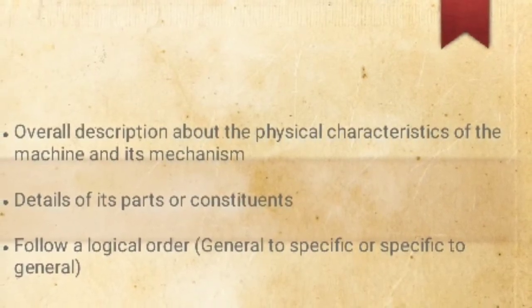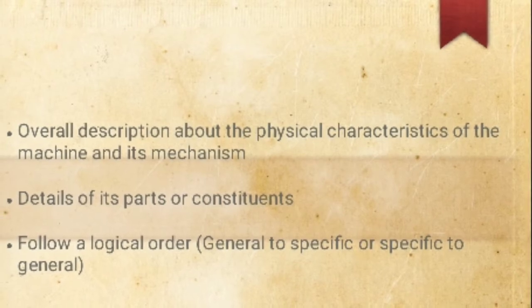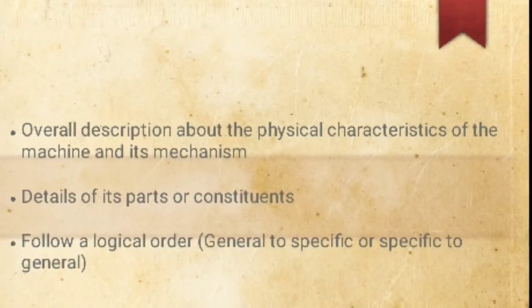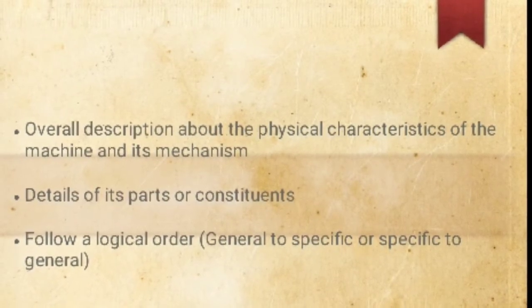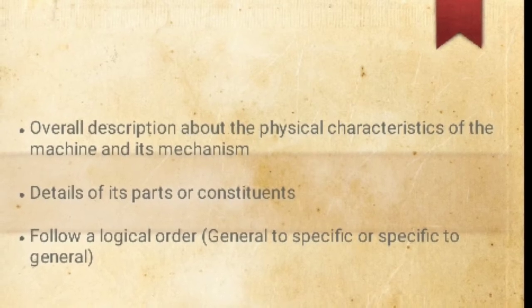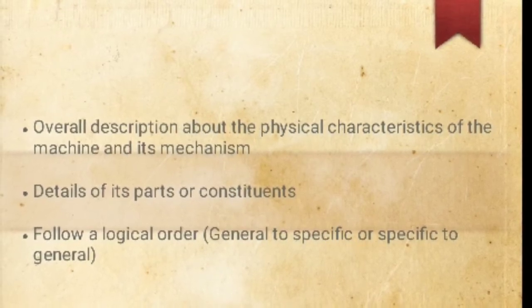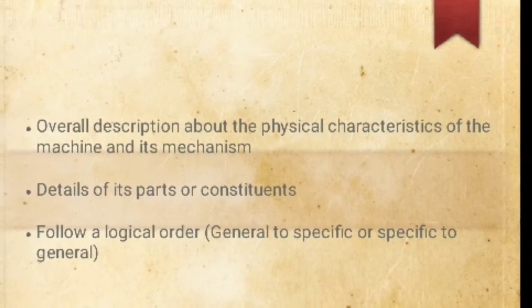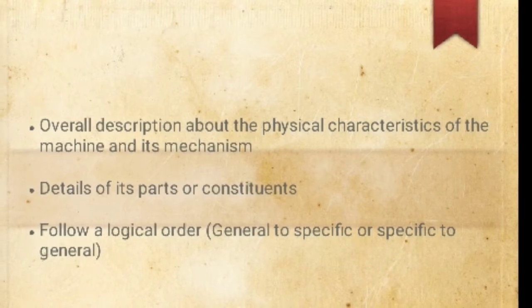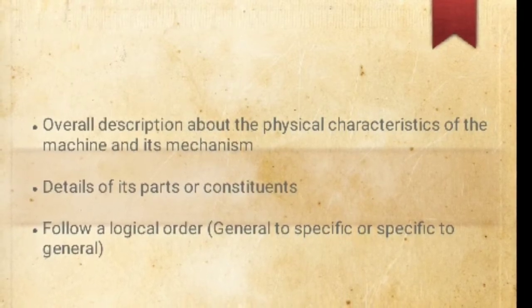Now let's follow this: how to describe them. Overall description about the physical characteristics of the machine and its mechanism. First, you have to describe the details of its parts or constituents. Follow a logical order: there is general to specific or specific to general.